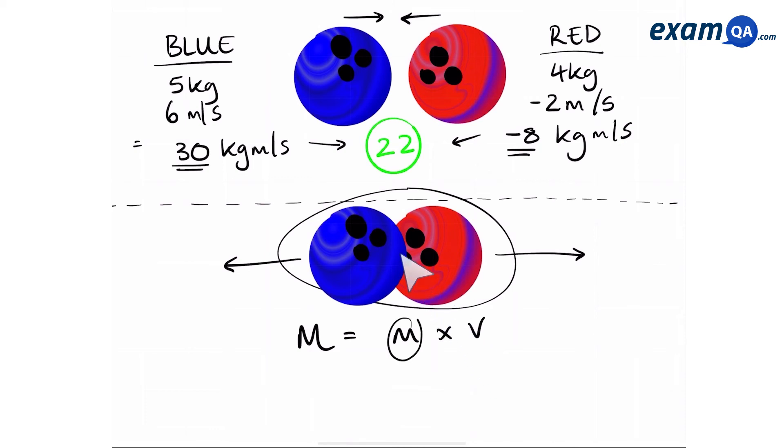Now we know the mass of this whole unit is going to be 5 plus 4, which is 9 kilograms, because the blue ball weighs 5 kilograms and the red ball weighs 4 kilograms. The momentum of the whole unit is the same as before, because remember, momentum before equals momentum after. So therefore 22.